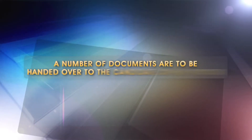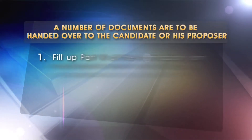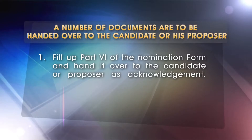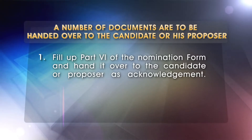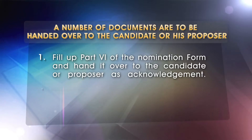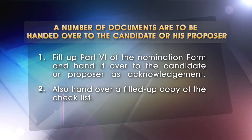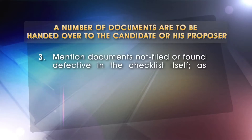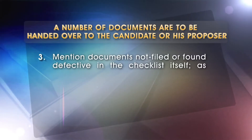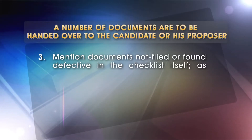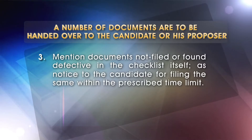A number of documents are to be handed over to the candidate or his proposer. 5. Fill up part 6 of the nomination form and hand it over to the candidate or proposer as acknowledgement. 6. Also hand over a filled up copy of the checklist. 7. Mention documents not filed or found defective in the checklist itself, as notice to the candidate for filing the same within the prescribed time limit.